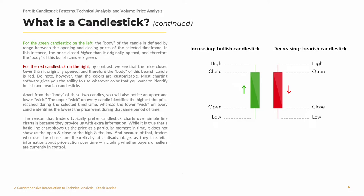For the green candlestick on the left, the body of the candle is defined by the range between the opening and closing prices of the selected timeframe. In this instance, the price closed higher than it originally opened, and therefore the body of this bullish candle is green. For the red candlestick on the right, by contrast, we see that the price closed lower than it originally opened, and therefore the body of this bearish candle is red. Do note, however, that the colors are customizable. Most charting software gives you the ability to use whatever color you want to identify bullish and bearish candlesticks.